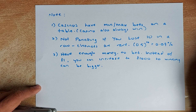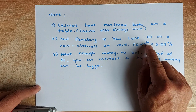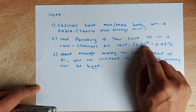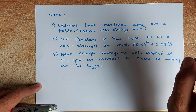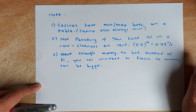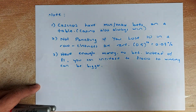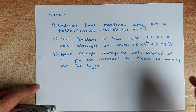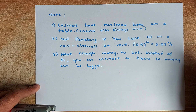Another important thing to note: you must not panic when you lose ten in a row. In fact, the chances of losing ten in a row is very rare — it is 0.5 to the power of 10, which is only 0.09%. You shouldn't panic at any time. Last but not least, the most important thing is you must have enough money to bet. If you have millions of dollars you can keep on going, and instead of one dollar you can increase to one thousand, two thousand, four thousand, and win much faster.